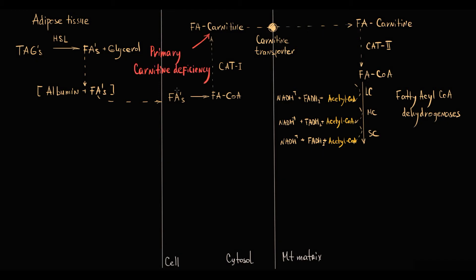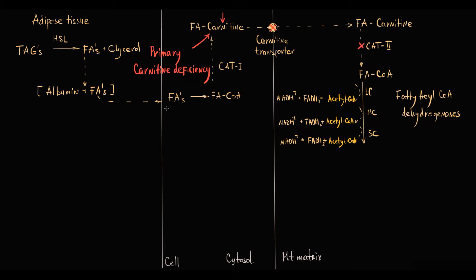In this condition, the carnitine level in the body is extremely low, and this disrupts the function of carnitine shuttle. Without carnitine, fatty acids cannot be transported from the cytoplasm into the mitochondrial matrix.